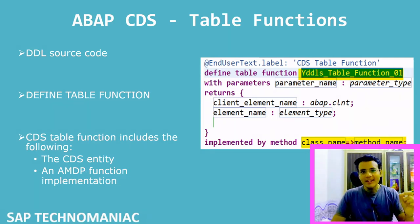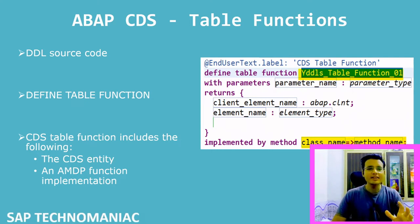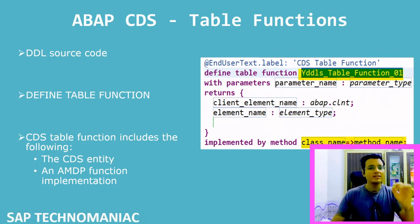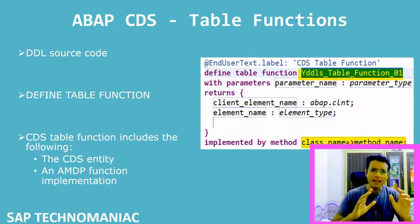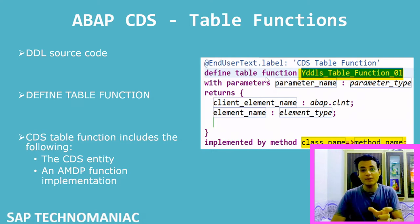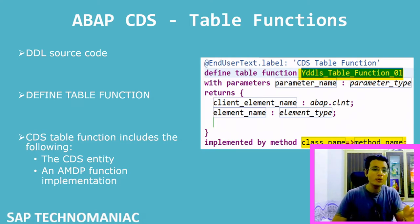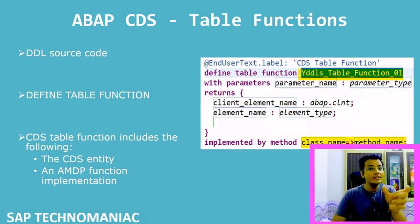How to create a CDS table function? It's simple — the same way we create a normal CDS view or CDS view entity, we create the CDS table function. The template will be a little different. Instead of 'define view' or 'define view entity', we write 'define table function' and give the CDS entity name.